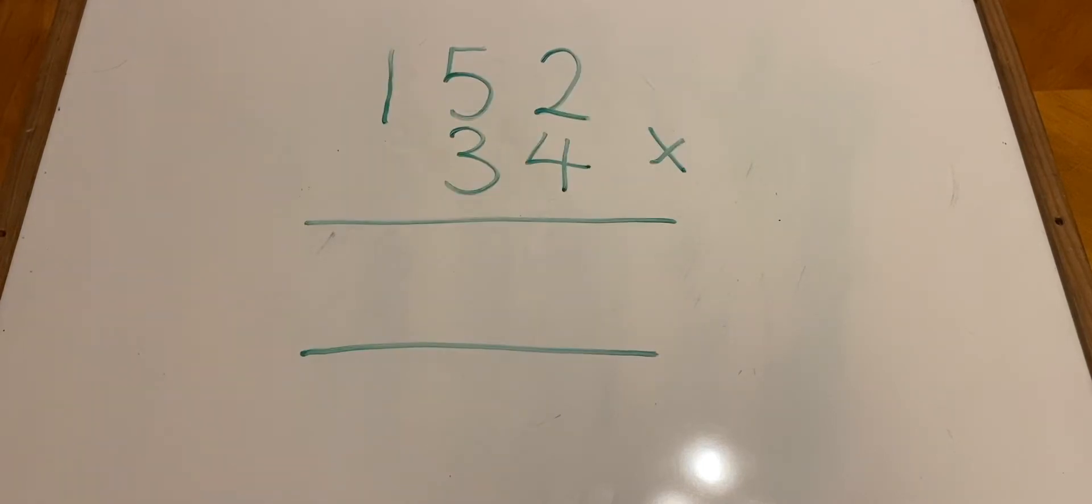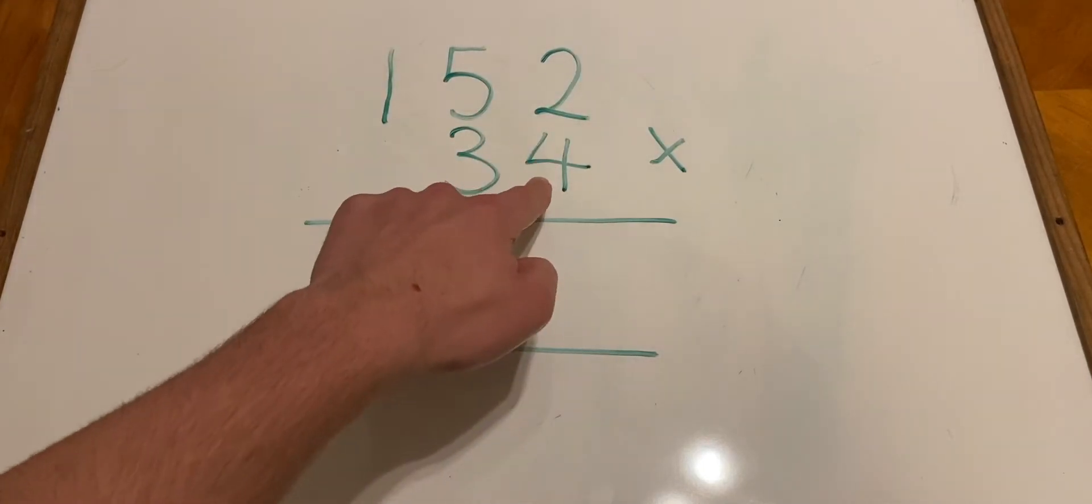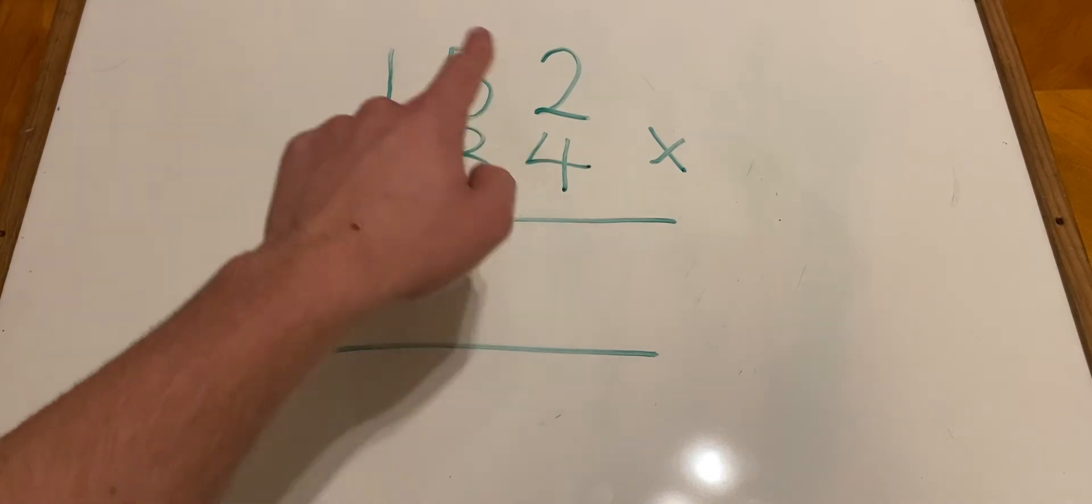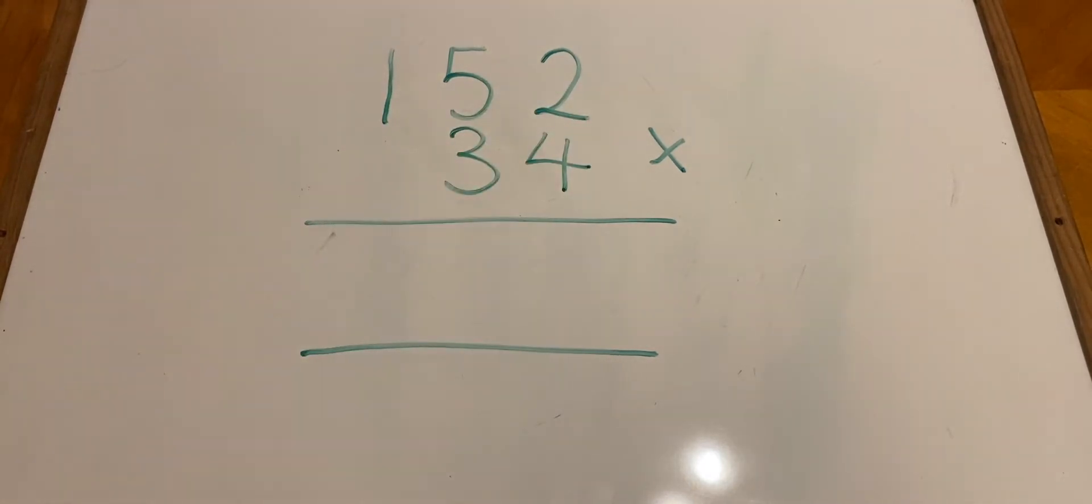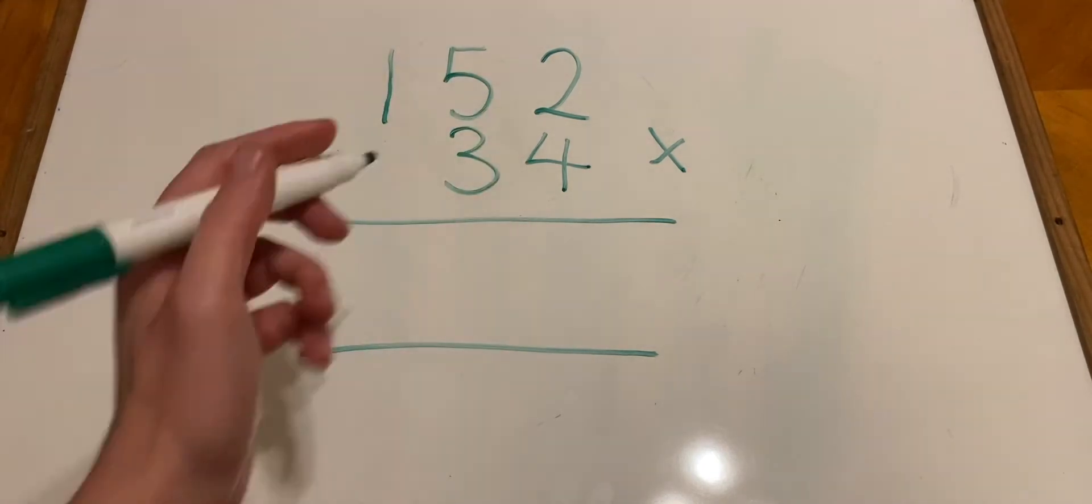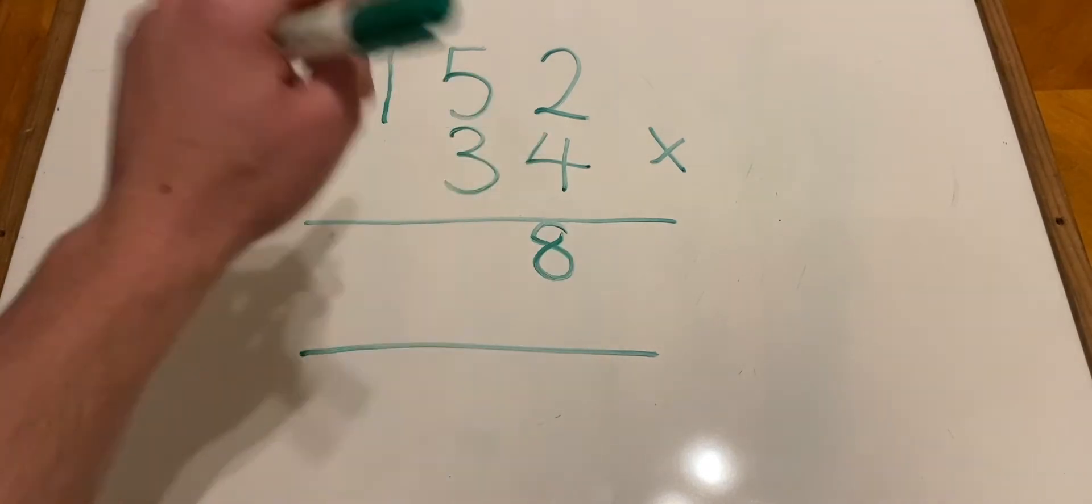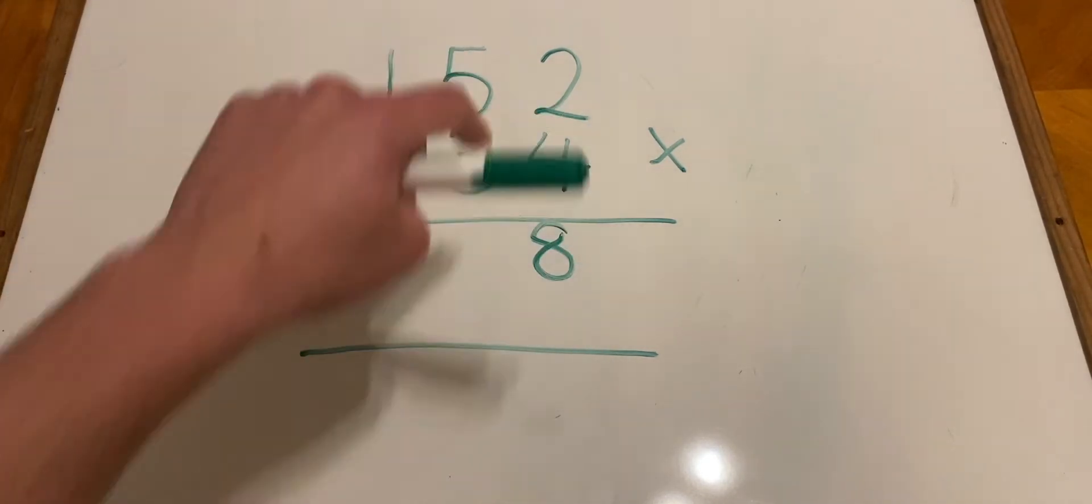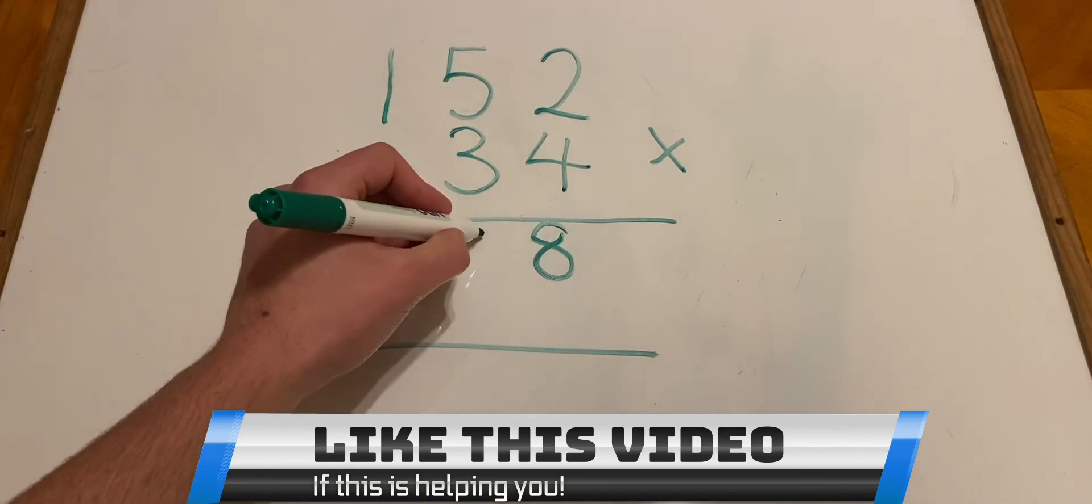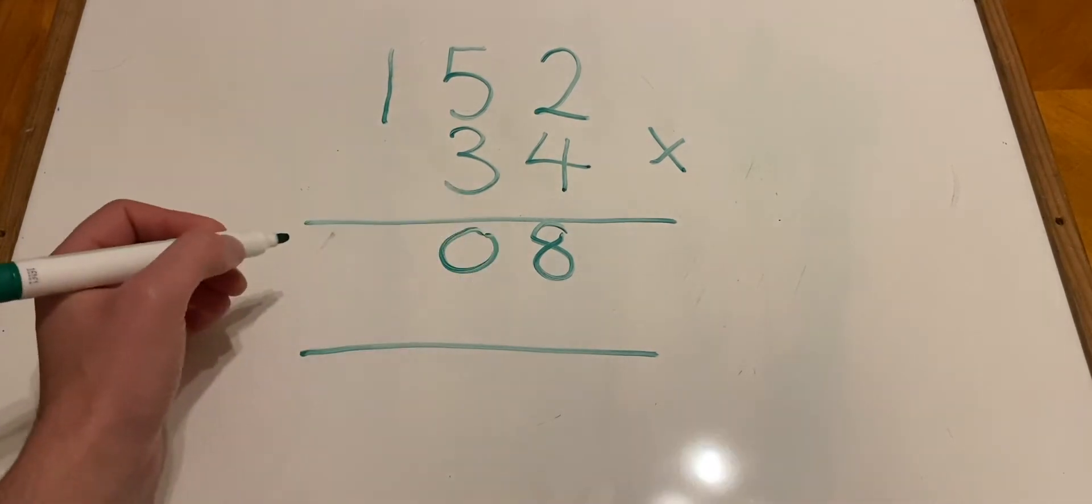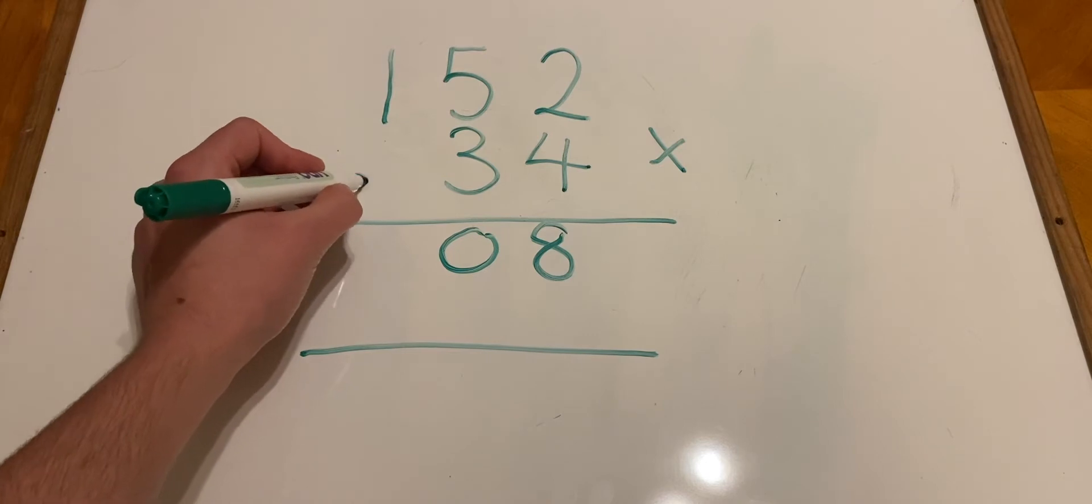Now we've set out the problem, we can start with the ones section. We're going to multiply 152 by 4 first, step by step. So 4 times 2 equals 8. We're then going to move on to 4 times 5, and 4 times 5 is 20. There are 0 ones in 20, so 0 there and a little 2 here.